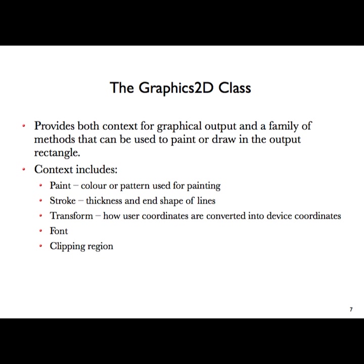There are various ways you might think about doing graphics. One is that whenever you do something you have to specify all details — every time you draw a line, specify how thick it is and what colour it is; every time you specify text, give it font and size. But that's not the way it's done here. The way it works is that as you go through your program, you maintain a notion of what's the current thickness of lines, the current font, and the current colour.